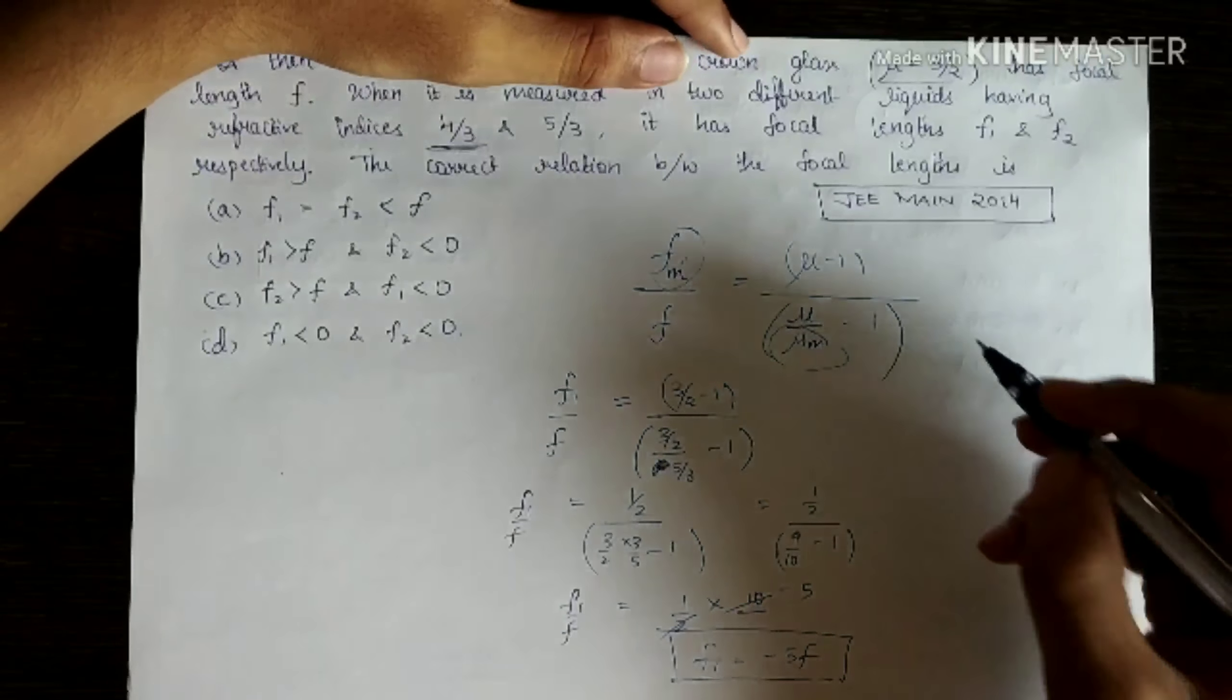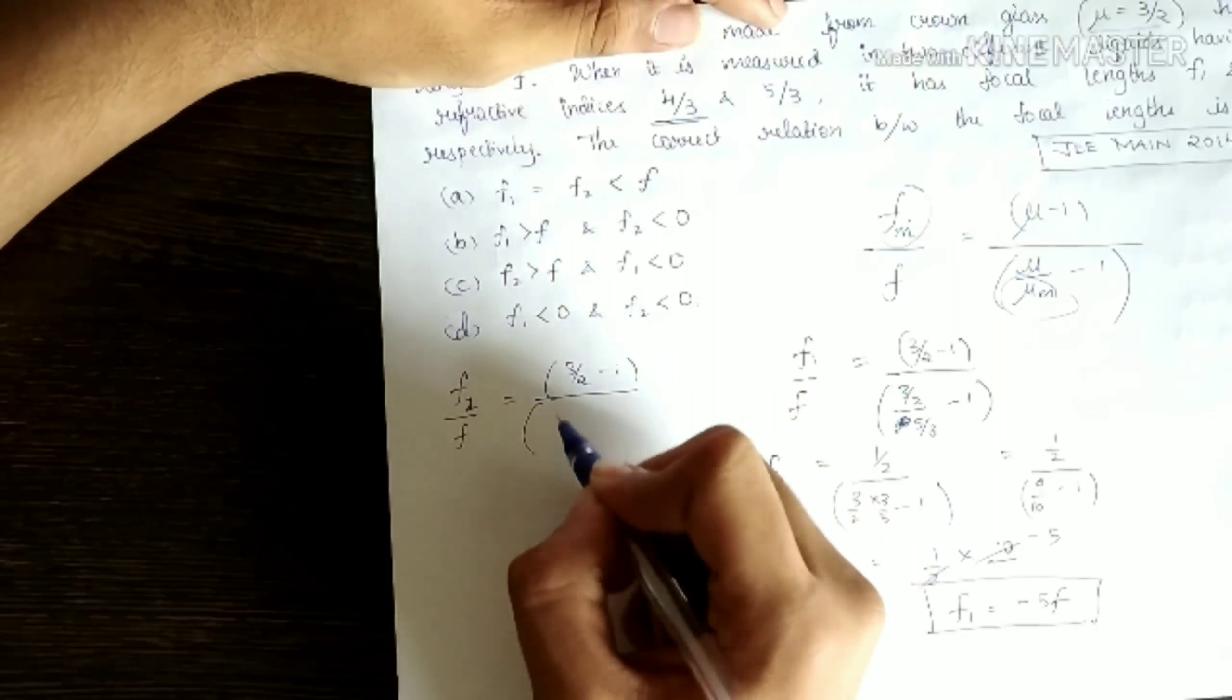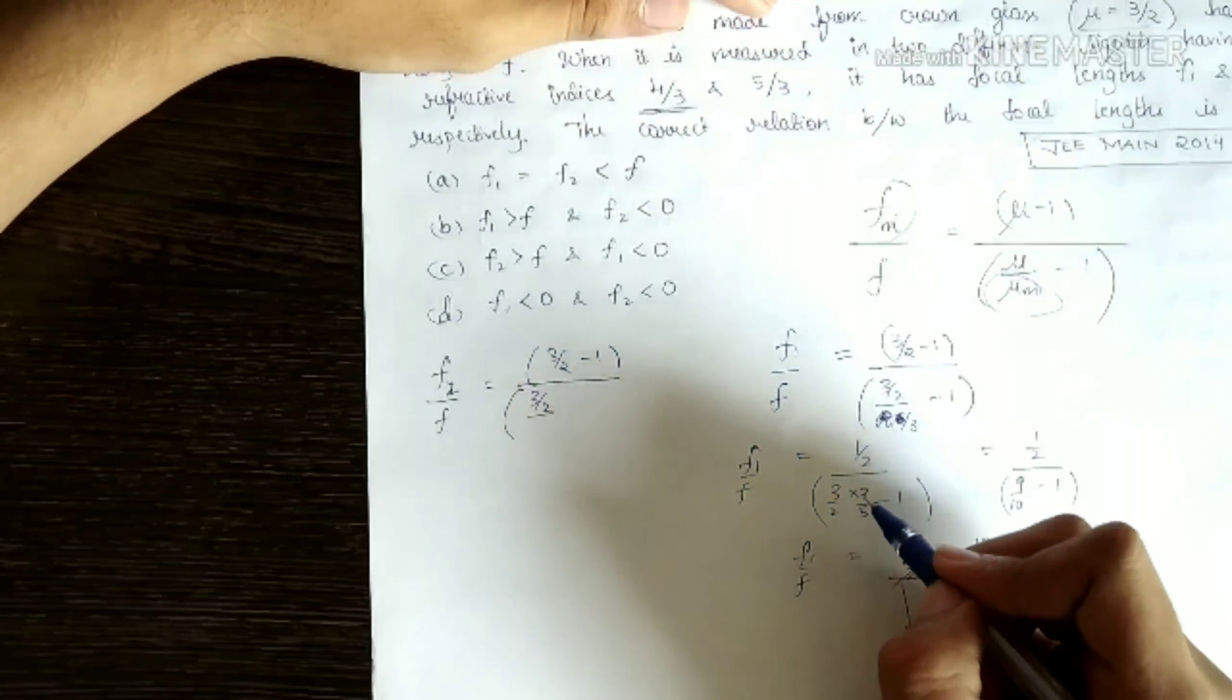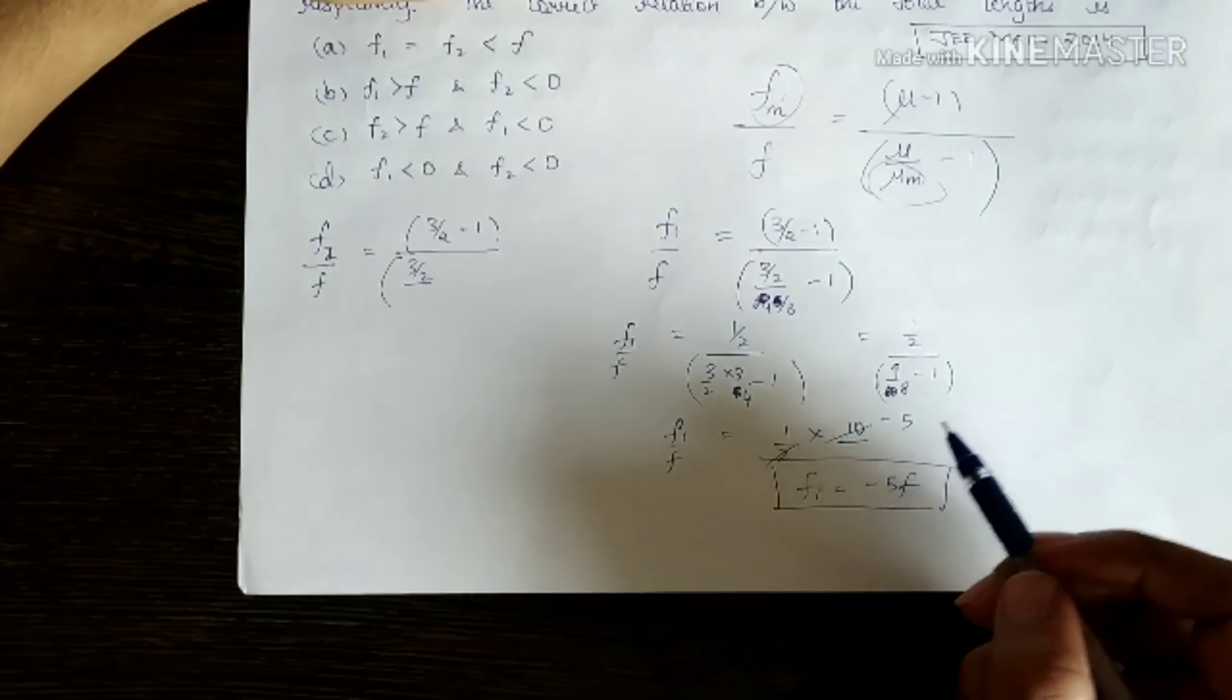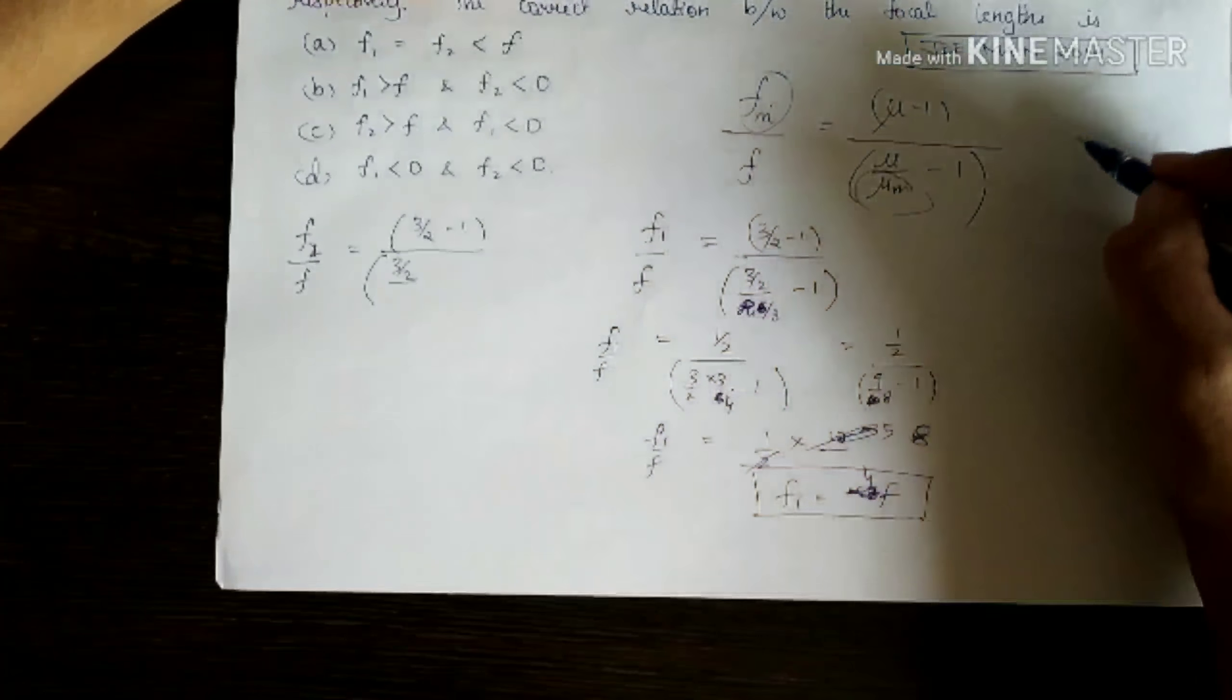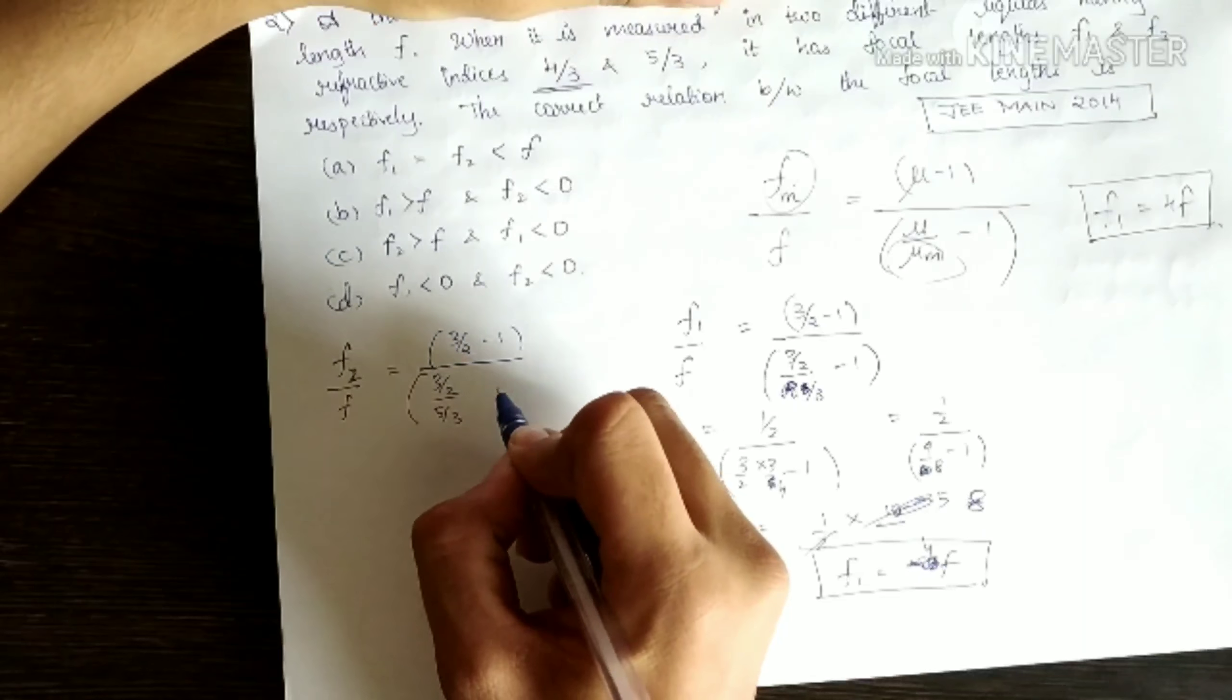And the next case says, F2 divided by F equals 3/2 - 1 divided by 3/2 divided by... I am sorry, I have to take 4/3 here, not 5/3. So it's 4/3, which gives 9/8. And this should have been 8, 8 divided by 2 should have been 4. So I would have got F1 = 4F. I was thinking something is wrong, so F1 is 4F.